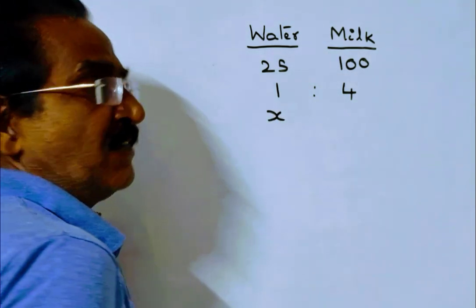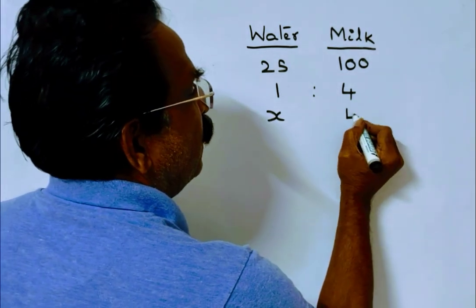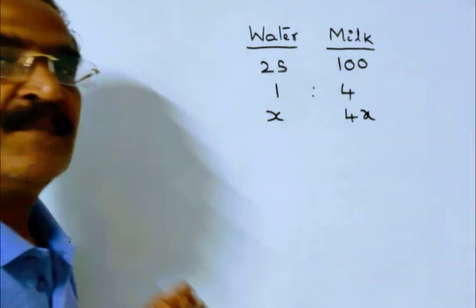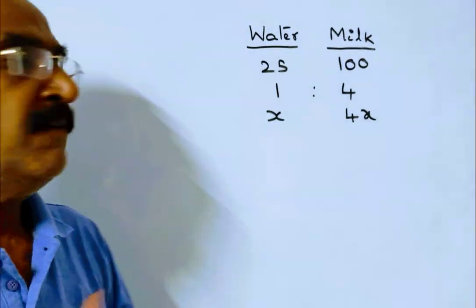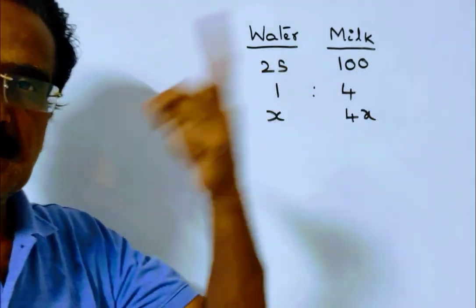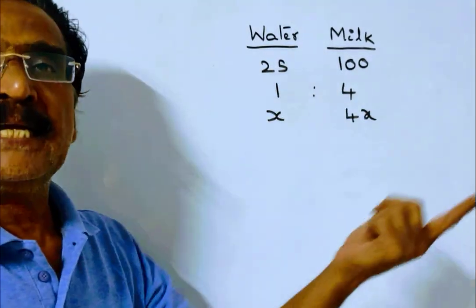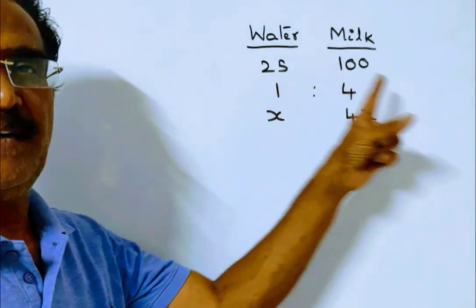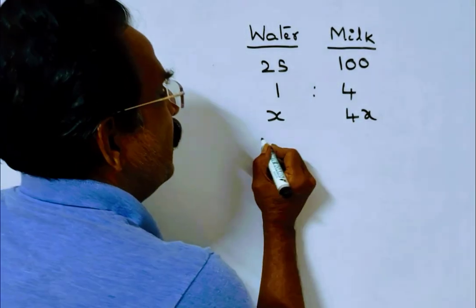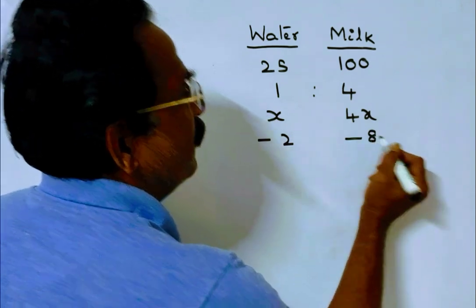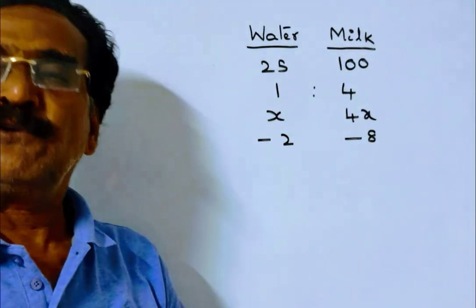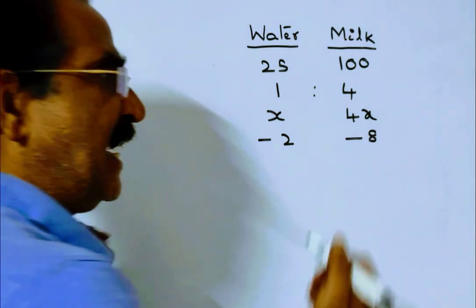Say x liters water and 4x liters milk. Now 10 liters of mixture is taken out. If 10 liters of mixture is taken out, water and milk will come out in the ratio 1:4. So 2 liters of water comes out and 8 liters of milk comes out. Now 25 liters of milk is added.